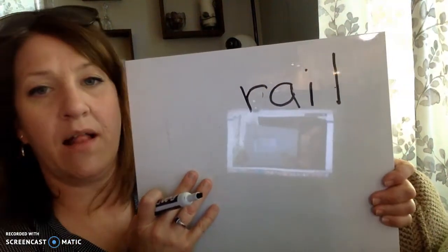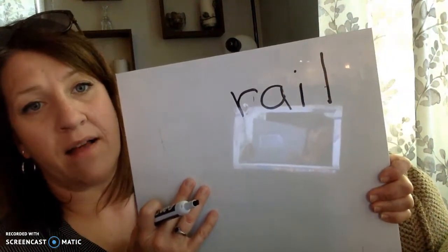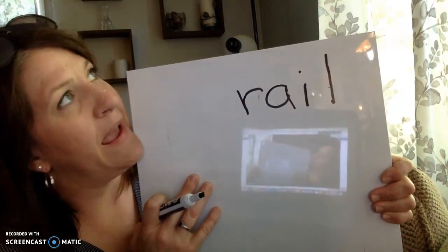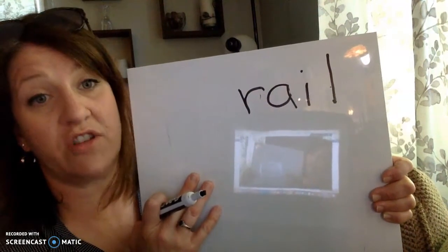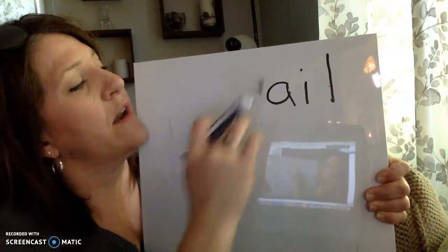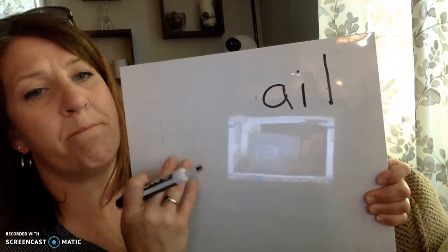Let's change rail into mail. Mail. The beginning is changing. No R anymore. Mail.